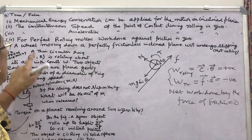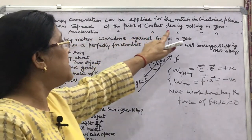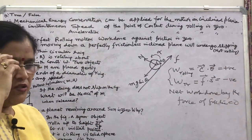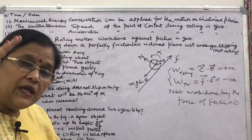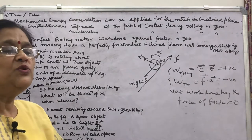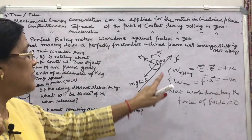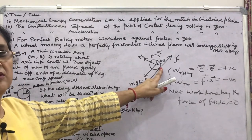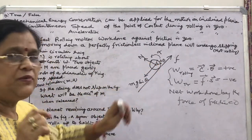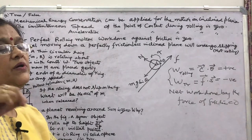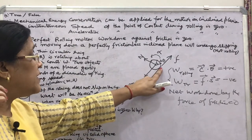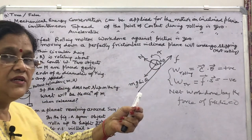The second part: the instantaneous speed of the point of contact during rolling is zero. We have seen that a rolling body can be imagined to be rotating about an axis passing through the point of contact — the lowermost point on the plane. If you select this axis, then at the point of contact, the instantaneous speed is zero.